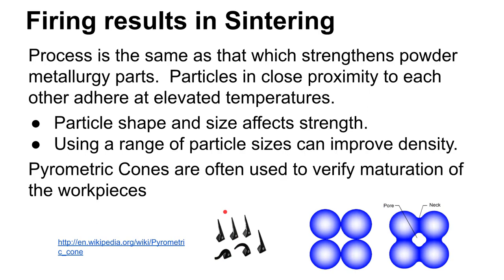Modern kilns use thermocouples and pyrometers to measure temperature. One classic method for verifying that parts in the kiln have reached the right temperature for the right amount of time is pyrometric cones. These cones go into the kiln and melt down, and when the tip touches the kiln floor you know sufficient temperature and time have been achieved. Different cones are used for different materials and applications.